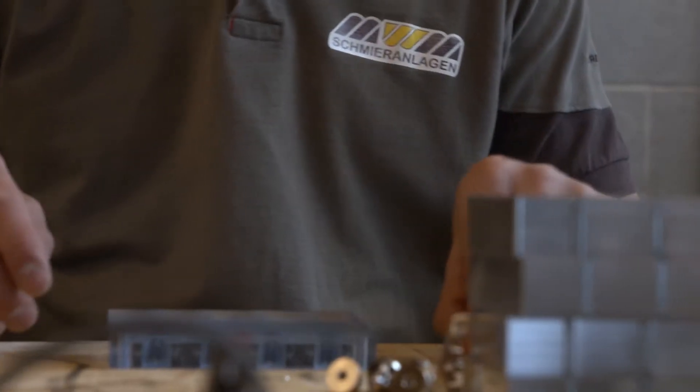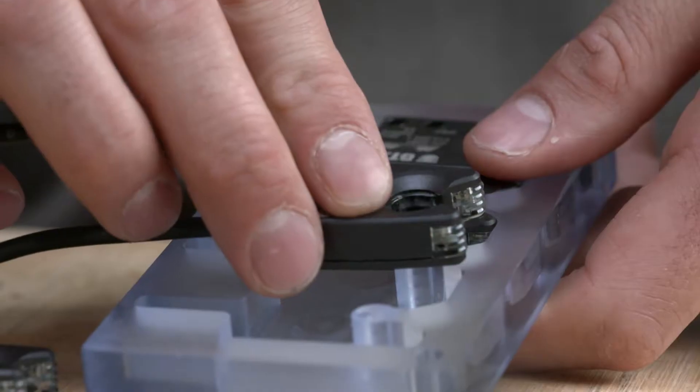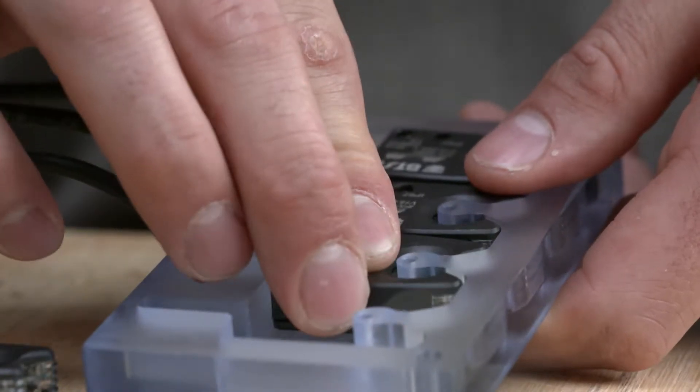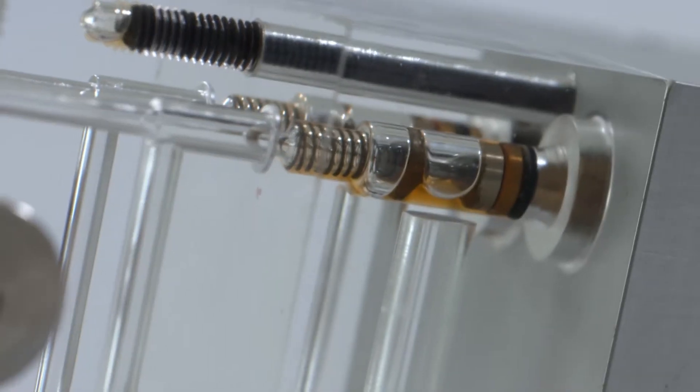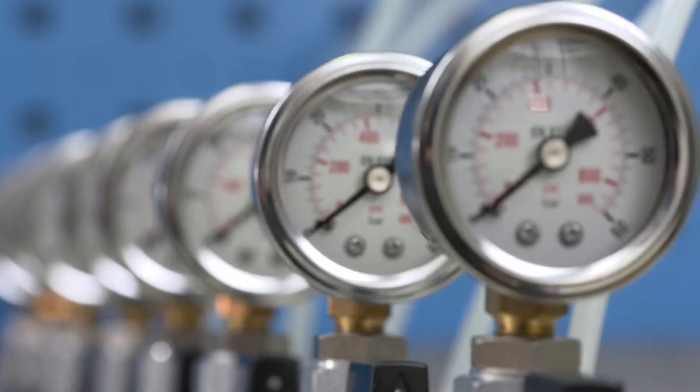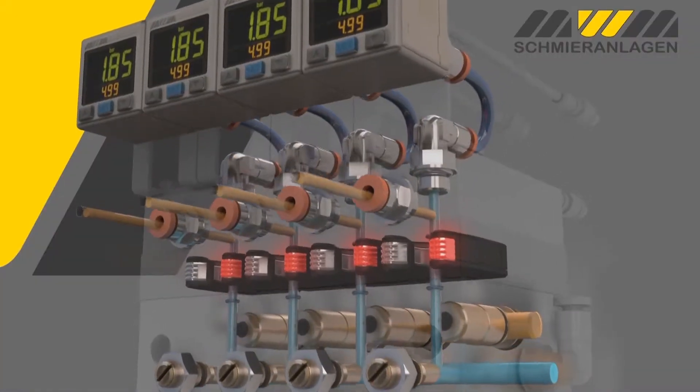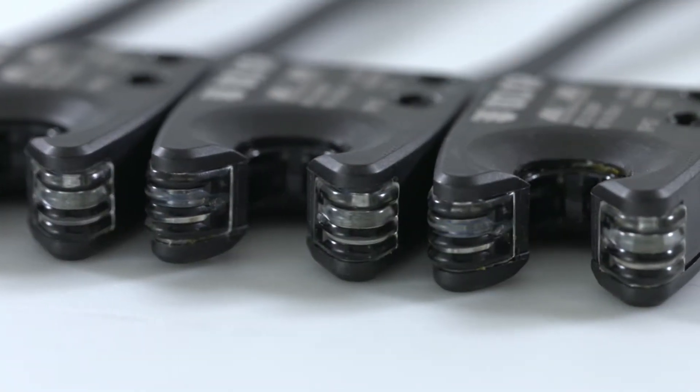Thanks to synergic research between the company, its customers and the Politecnico di Milano, the first patents in minimal lubrication came to light. MWM was the first Italian company to patent an oil-air minimal lubrication system with an integrated electronic detection device.